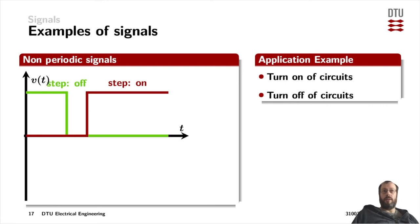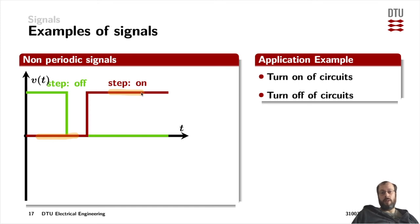Non-periodic signals are very often seen at the turn-on and turn-off of circuits. Here we have a green waveform representing a turn-off — a step function stepping from a high state to a low state — and a turn-on function stepping from a low state to a high state, very often seen in digital electronics. For example, a mobile phone receiving a call and starting to trigger something.